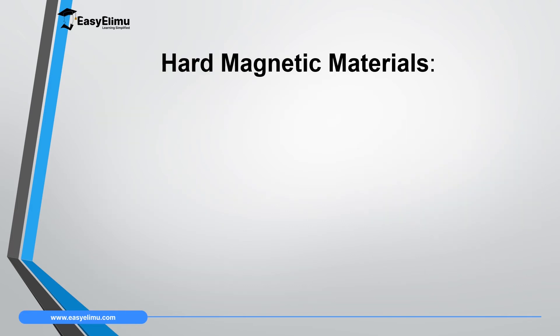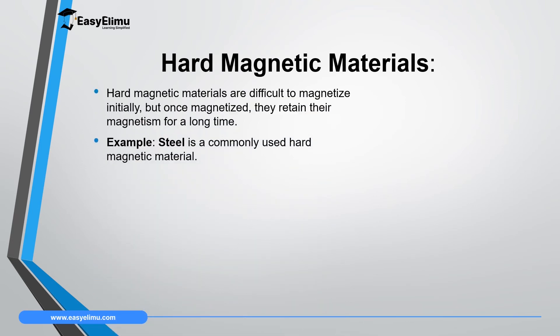The second category is hard magnetic materials. Hard magnetic materials are very difficult to magnetize, but once they gain magnetism they retain it for a very long time. A common example is steel, which is the commonly used hard magnetic material.